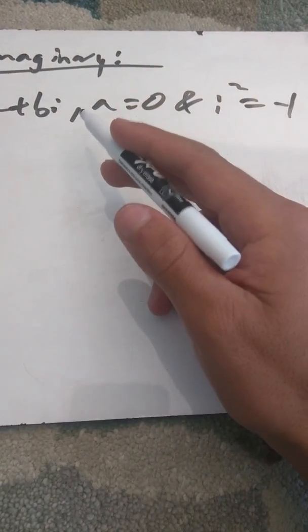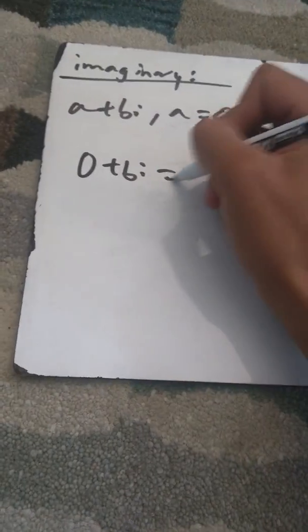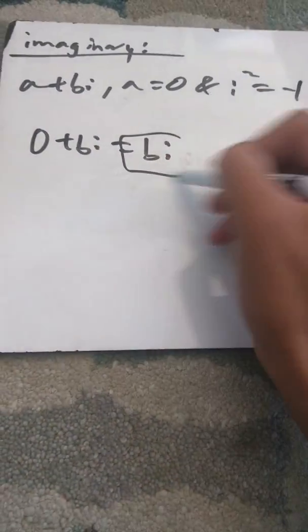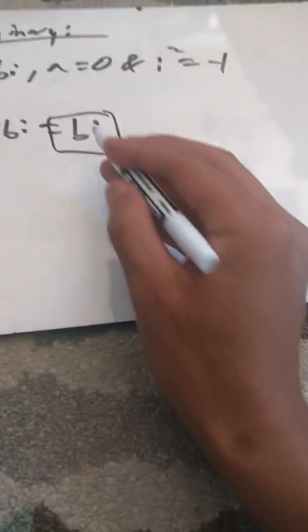Now we have imaginary numbers — numbers of the form a plus bi, where a equals 0 and i squared equals negative 1. With a equal to 0, we have 0 plus bi, which is just bi — a real number times the imaginary unit, the square root of negative 1.